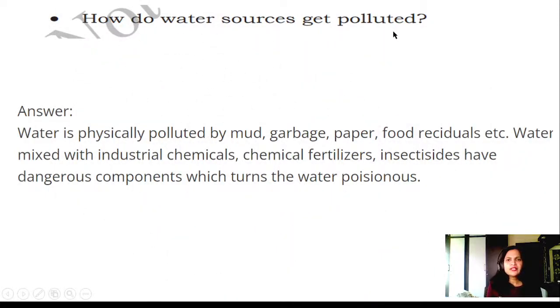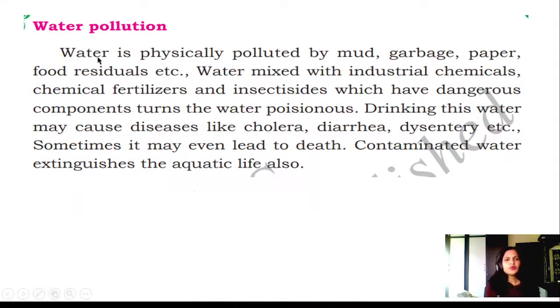How do water sources get polluted? Answer: Water is physically polluted by mud, garbage, paper, food residuals, etc. Water mixed with industrial chemicals, chemical fertilizers, and insecticides have dangerous components which turn the water poisonous. Water pollution: Water is physically polluted by mud, garbage, paper, food residuals, etc. Water mixed with industrial chemicals, chemical fertilizers, and insecticides which have dangerous components turns the water poisonous. Drinking this water may cause diseases like cholera, diarrhea, dysentery, etc. Sometimes it may even lead to death. Contaminated water extinguishes aquatic life also.